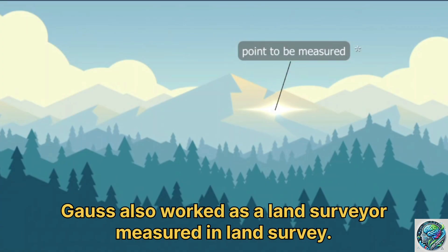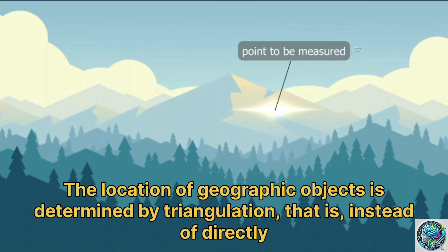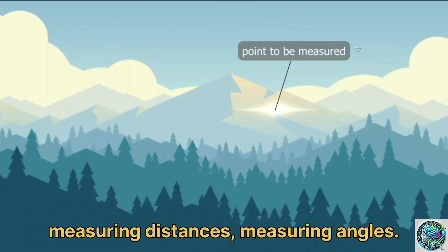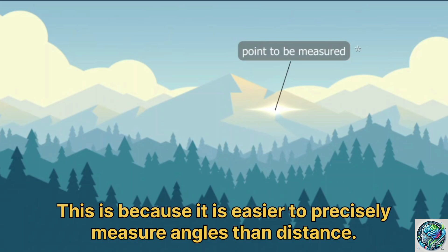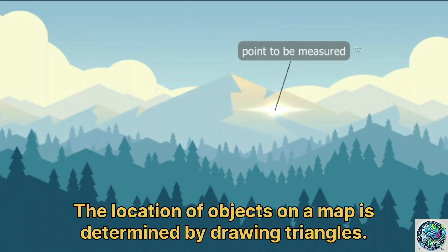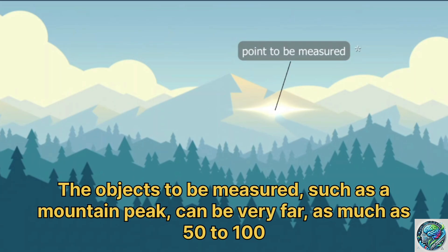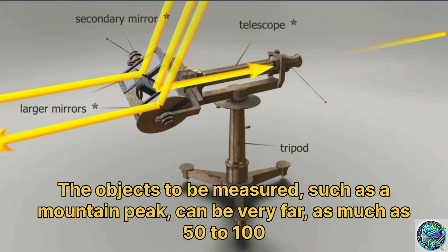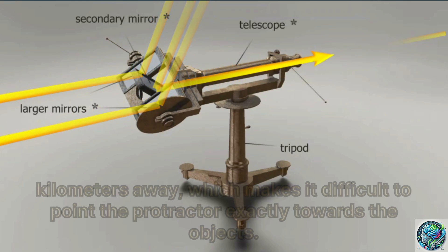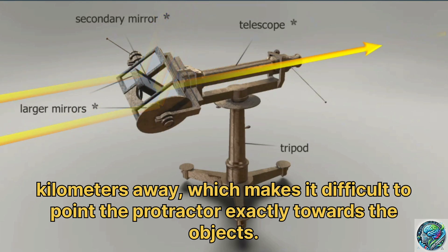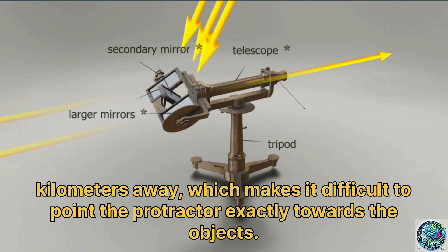Gauss also worked as a land surveyor. In land surveying, the location of geographic objects is determined by triangulation, that is, instead of directly measuring distances, measuring angles. This is because it is easier to precisely measure angles than distance. The location of objects on a map is determined by drawing triangles. The objects to be measured, such as a mountain peak, can be very far, as much as 50 to 100 kilometers away, which makes it difficult to point the protractor exactly towards the objects.